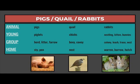The young of pigs are piglets. A group of pigs is a herd, litter, or farrow, and the home of pigs is a stye or a pen. The young of quails are chicks. A group of quail is a bevy or a covey, and the home of quail would be a nest.